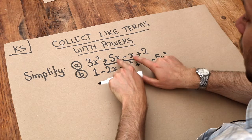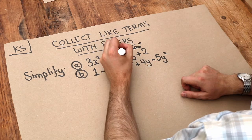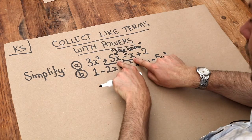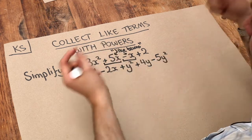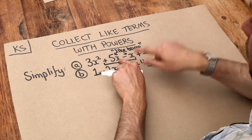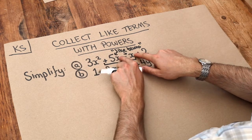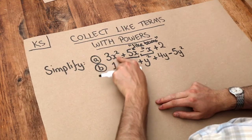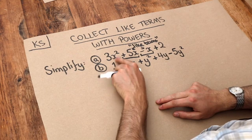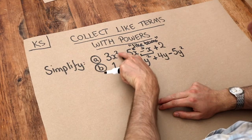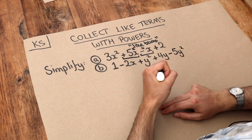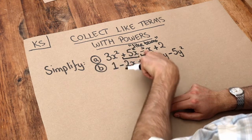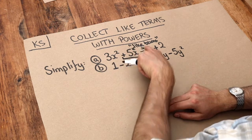So these are like terms because they involve the same variables — x — and they involve the same powers. Well, they don't have a power, so the power is effectively 1. But this is not a like term because the x has a squared on it. So it has to be treated separately and you can't combine it with these x terms.